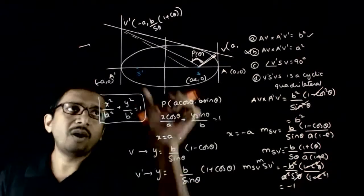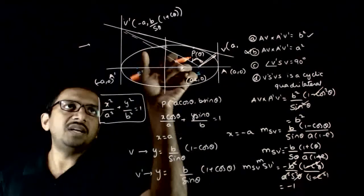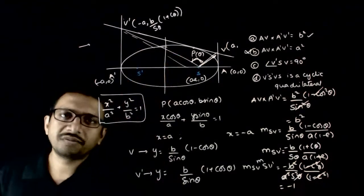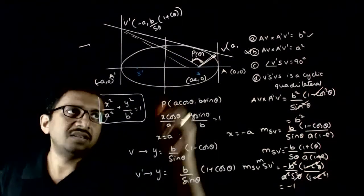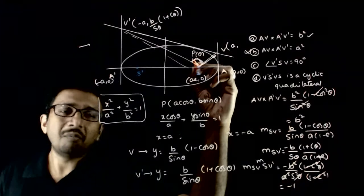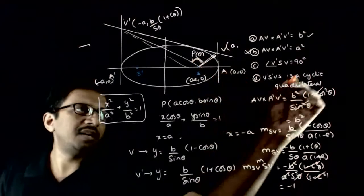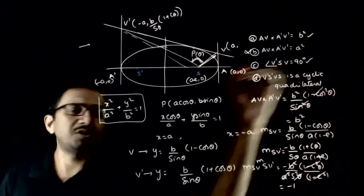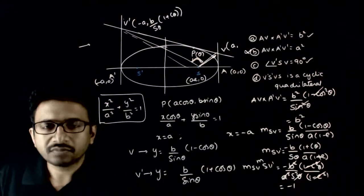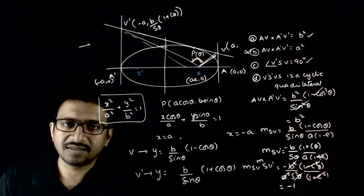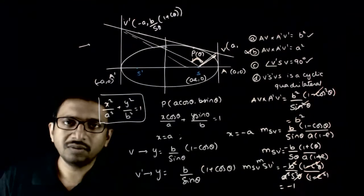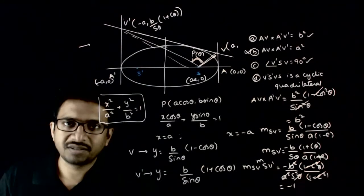Since the product of slopes of SV and SV dash equals −1, the angle VSV dash is 90 degrees. Hence option C is correct.